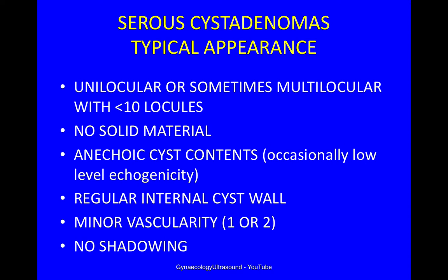The typical appearance of a serous cystadenoma is unilocular, although it can be multilocular with fewer than 10 locules, no solid material, anechoic cyst contents — though occasionally it contains low level echogenicity — a regular internal cyst wall, minor vascularity with a score of 1 or 2, and no shadowing.